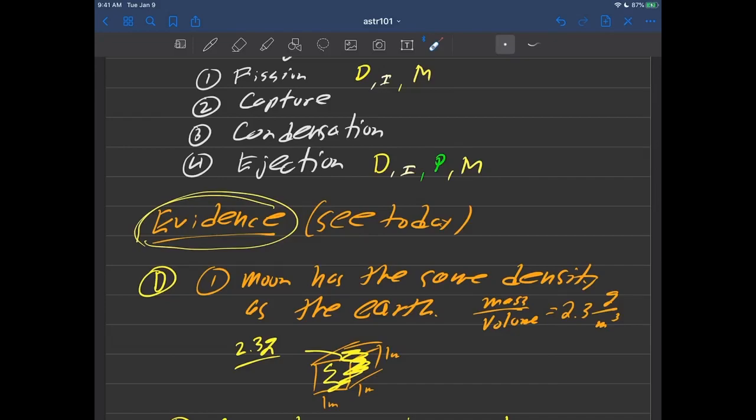So you're sort of seeing the most likely scenario based on the scientific evidence that we see. Okay, so before I sort of narrow these down one more time, I want to show you now where all four of these things might have come from, what mechanisms cause fission, what causes capture, what causes condensation, and what might have caused ejection. Okay.